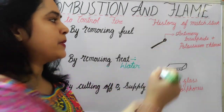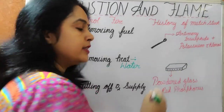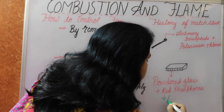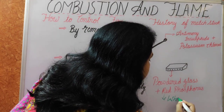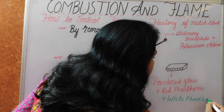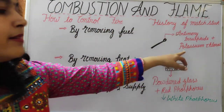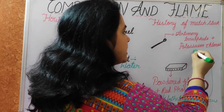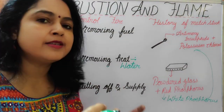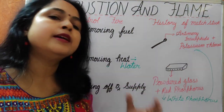When we rub the head of the match against the striking surface, some of the red phosphorus gets changed into white phosphorus. This white phosphorus then reacts with potassium chlorate, and when this reaction takes place, enough heat is generated to reach the ignition temperature of antimony trisulfide, causing the match to ignite.